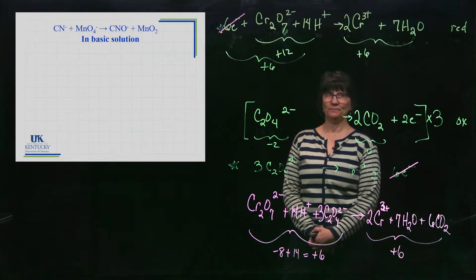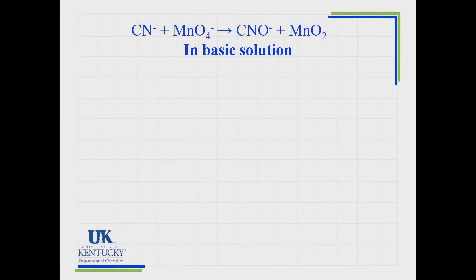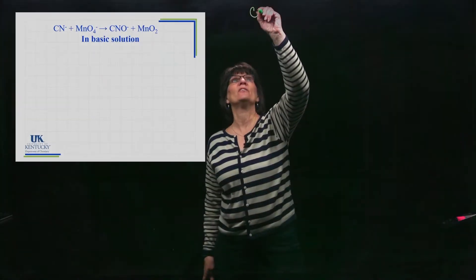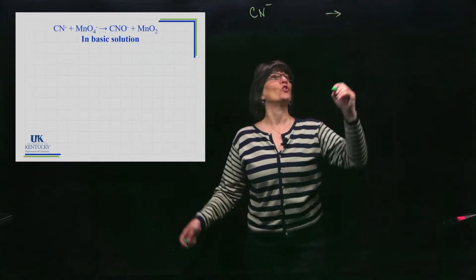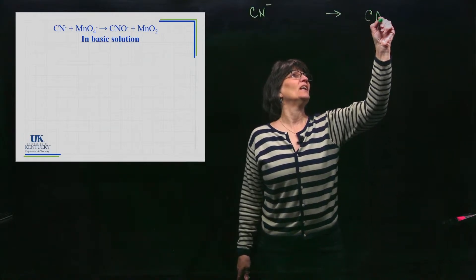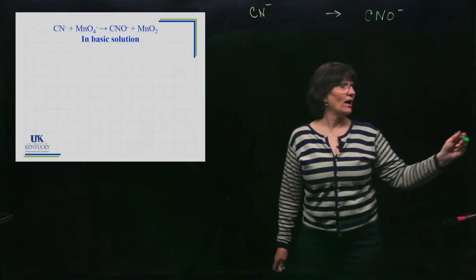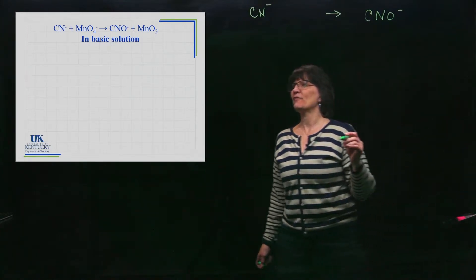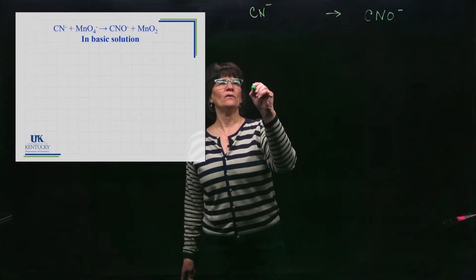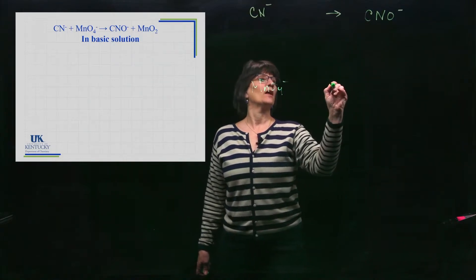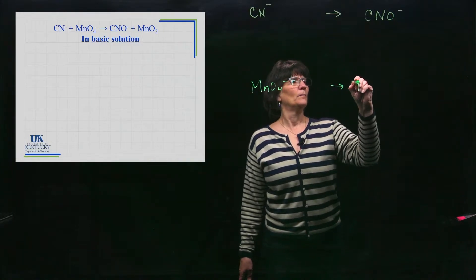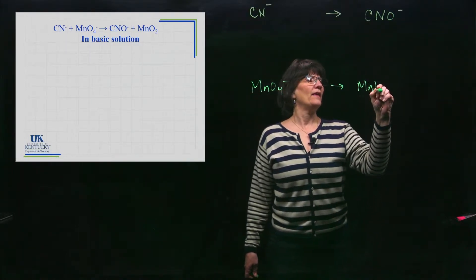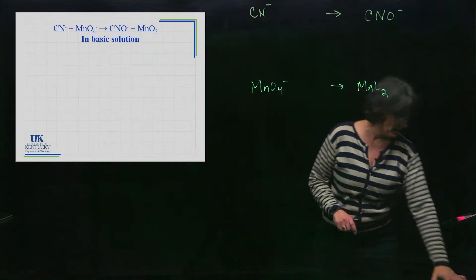Now we're ready to do one in basic solution. We have CN⁻ paired with its product CNO⁻ as one half-reaction, and MnO₄⁻ going to MnO₂ as the other half-reaction.